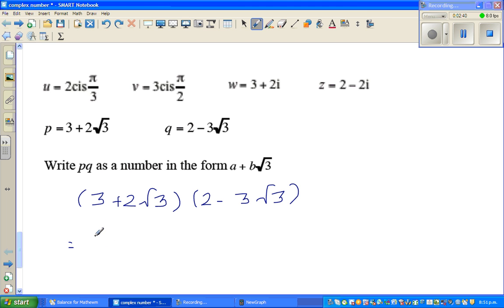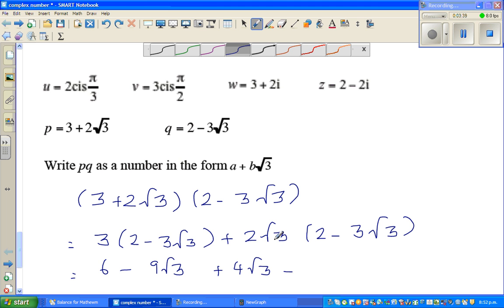So what I've done is I've distributed 3, I've expanded 3 with this whole bracket, then plus 2 root 3 with this whole bracket. So now opening the bracket, so 3 times 2 is 6 minus, so 3 times 3 is 9 root 3 plus, this is 4 root 3. Now 2 root 3 times 2 is 4 root 3. Now root 3 times root 3 is 3.